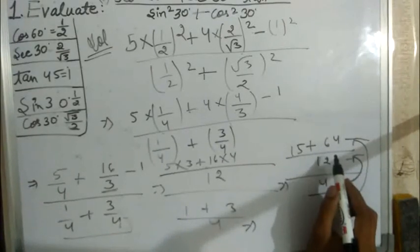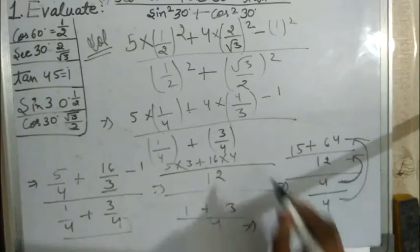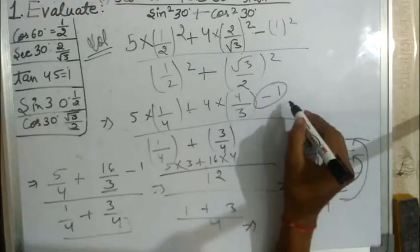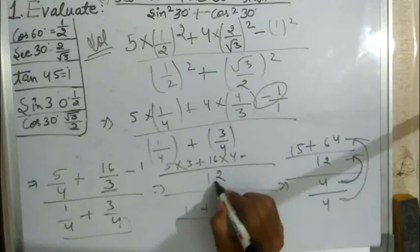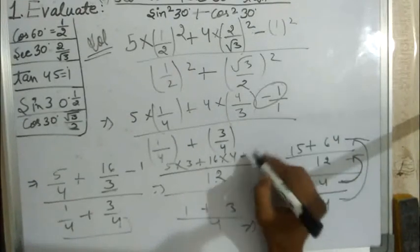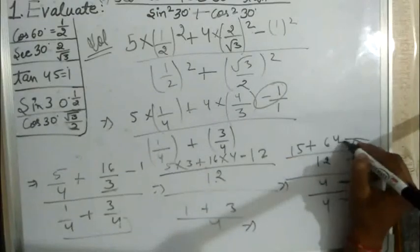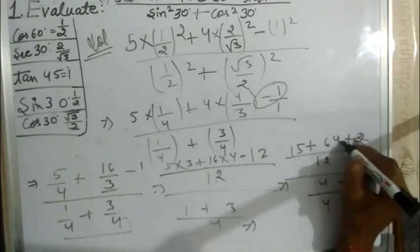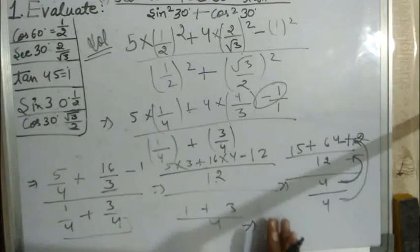We add. Here is minus 1 only in this. We multiply by 12. So we will solve it, we will get 167.